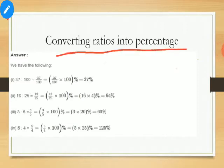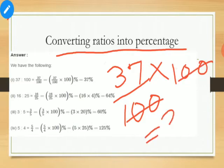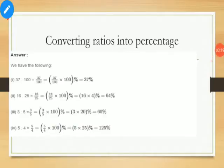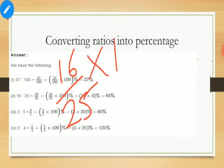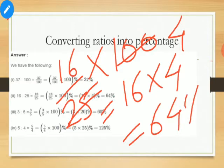Now converting ratios into percentage. If the ratio 37:100 is given, write it in the form of a fraction and then multiply by 100 to convert it into percentage. Similarly, if 16 upon 25 is given, multiply by 100 — the 100 will be cancelled by 25, leaving 16 multiplied by 4, which gives 64 percent.